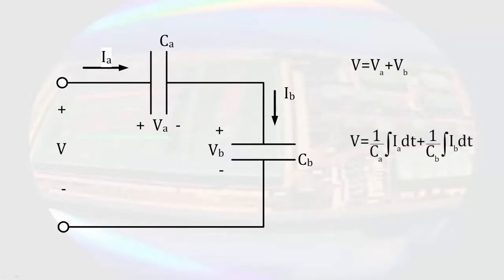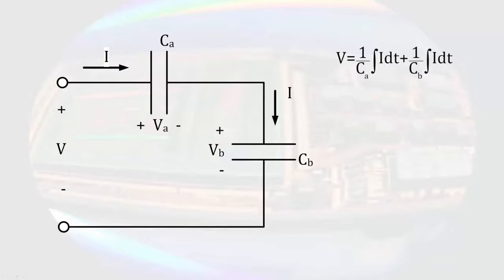Substituting the current voltage relationship for capacitors, we can then note that, since the two capacitors are in series, they have the same current going through them. So we can substitute I in for the two currents. We can then factor the integral out. We see that we can write the sum of the reciprocals of the capacitance as the reciprocal of an equivalent capacitor.